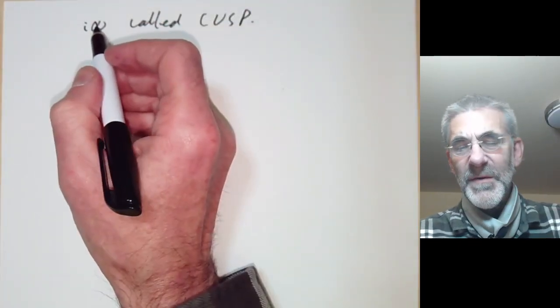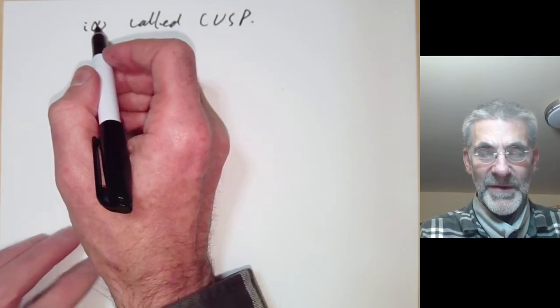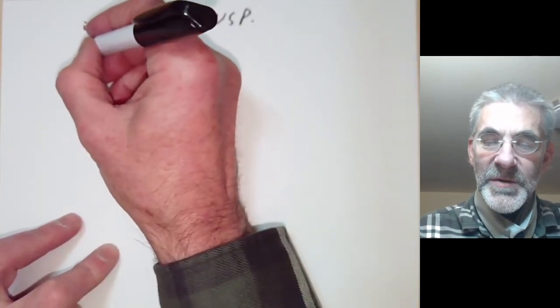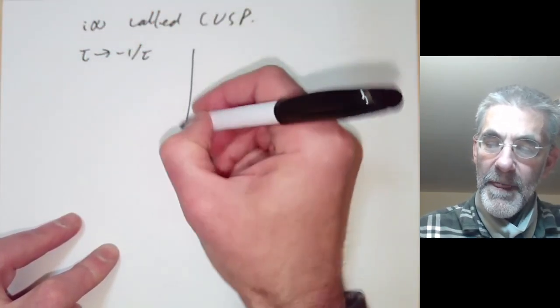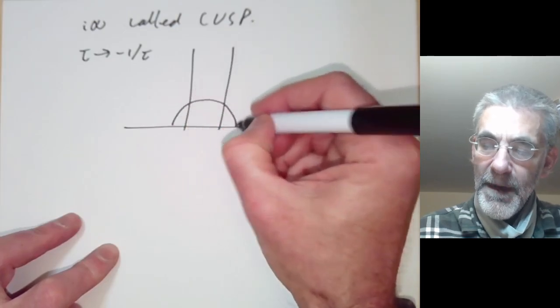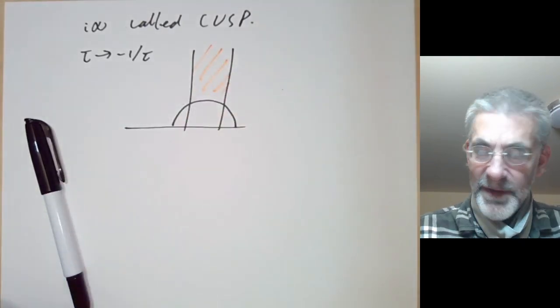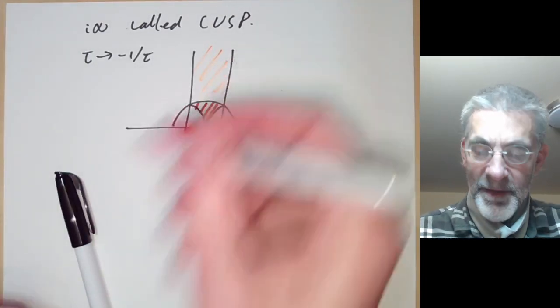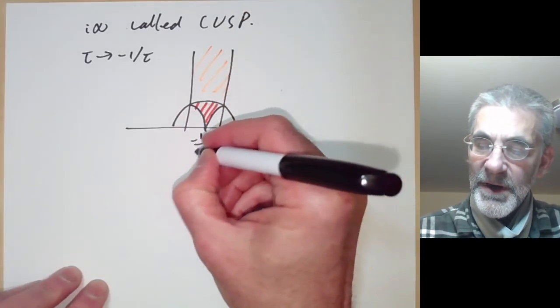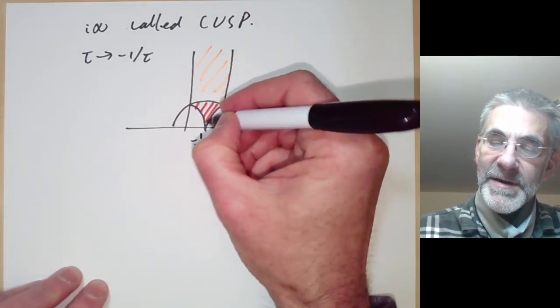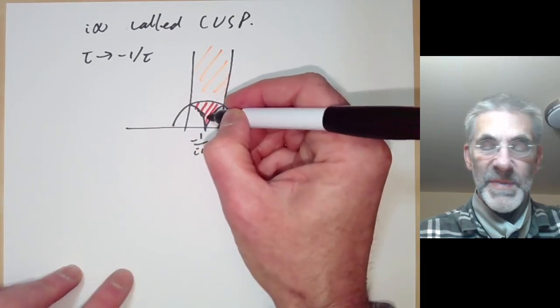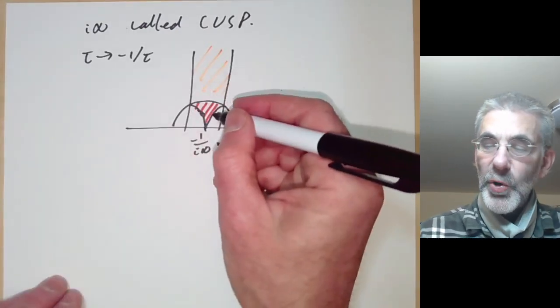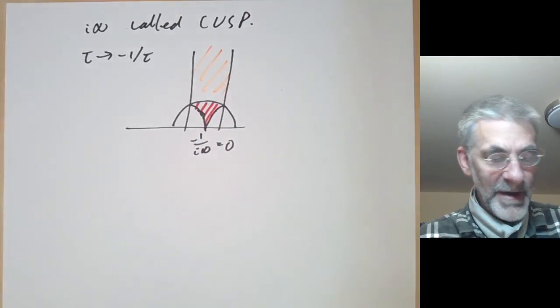So the point i infinity is called a cusp. It's sort of in the boundary of the upper half plane in some sense rather than actually in the upper half plane. The reason it's called a cusp is if you change tau to minus one over tau, then our fundamental domain which originally looks like this orange region becomes this red region here. And the point i infinity becomes minus one over i infinity which is just equal to zero, and you can see that near zero this region does indeed look like a cusp. So a cusp just means something that's a bit pointy, like a cusp of a mountain or something.